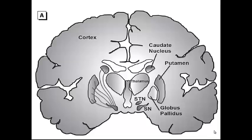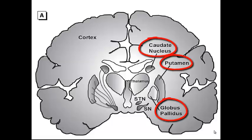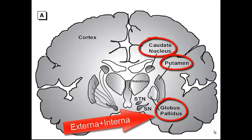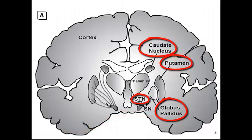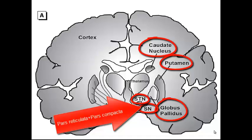Before that, let's briefly discuss basal ganglia. Basal ganglia is a network of different nuclei with the primary function of planning and initiating movement. The components include the caudate nucleus, putamen, globus pallidus with two subparts — externa and interna — subthalamic nucleus (abbreviated STN), and substantia nigra with its two components: pars reticulata and pars compacta, meaning the compact part and the reticular part.